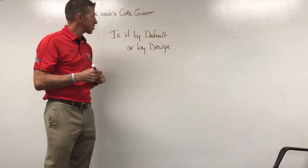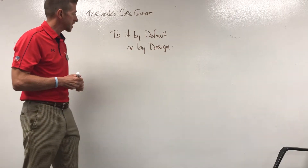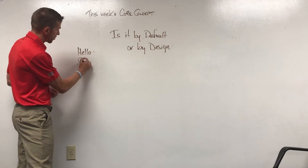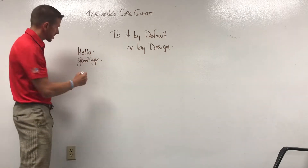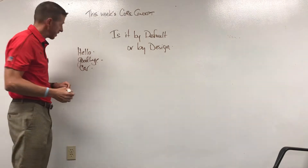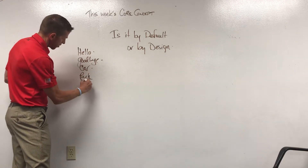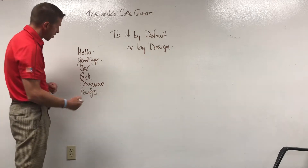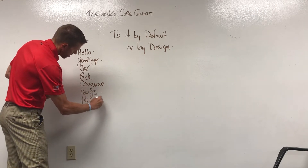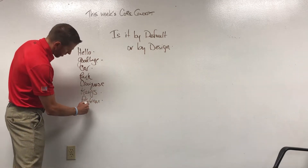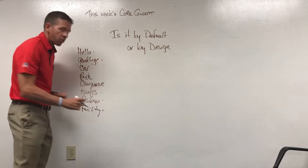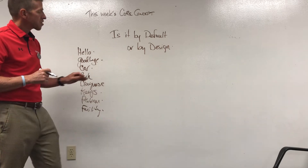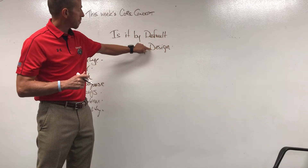So what are some of the things that could be affected by something being either by default or by design? They could be simple things such as: how do we say hello to a customer, how do we say goodbye to a customer, how do we return a customer's car to them, what does it look like, where do we park cars, how do we diagnose cars, where do we put keys, what do we do when there's a problem, how do we take care of our facility? Those are just a handful of areas we look at.